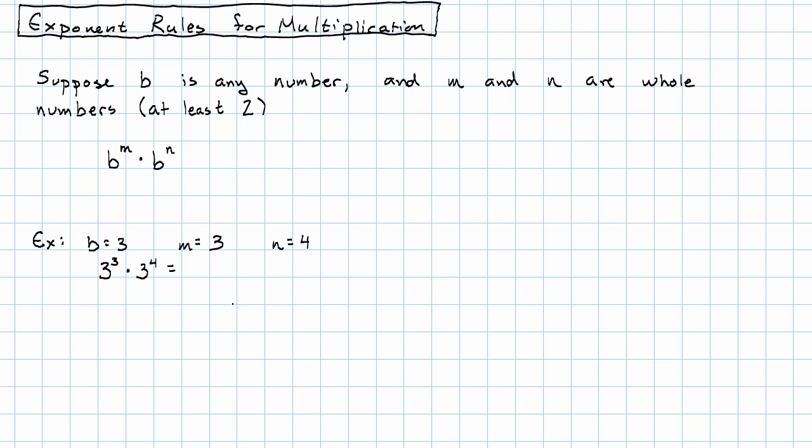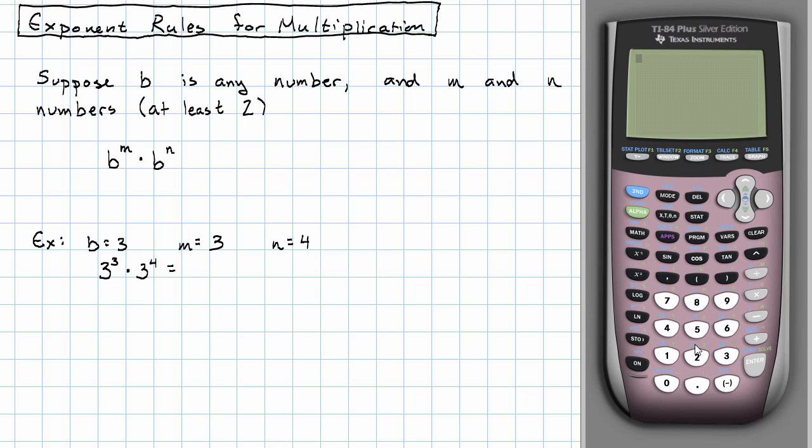Well, we can work that out on our calculator if we want. We could also work it out by hand, but life is short. 3 to the 3rd times 3 to the 4th is 2,187.